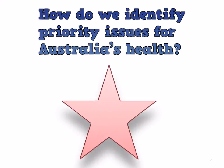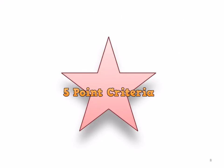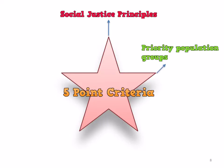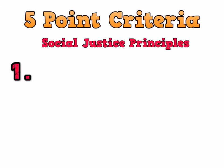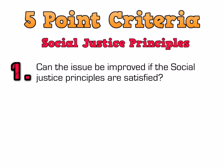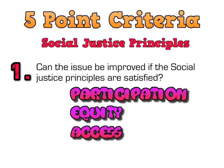Determining priorities in health spending is very challenging. Different people in the community take different perspectives, but the Australian government has determined that, along with epidemiology, the following considerations are important and can be used as criteria: social justice principles, priority population groups, prevalence of condition, potential for prevention and early intervention, and costs to the individual and the community.